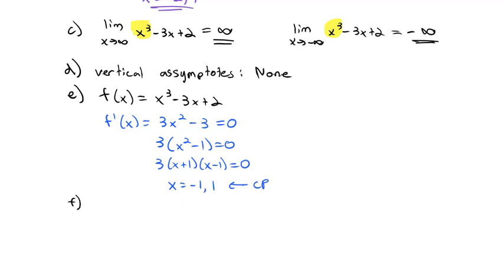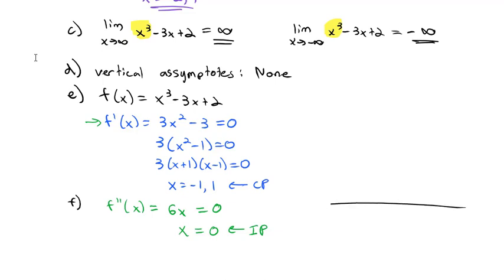We're going to combine that with the information from part f, the second derivative. Taking the second derivative of 3x² - 3 gives 6x. Set that equal to 0, so x = 0 becomes an inflection point. For the sake of our graph, let's make our number line over here to the right.